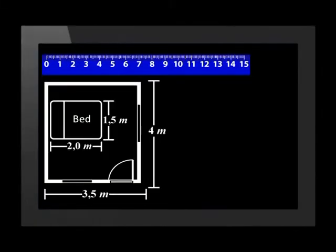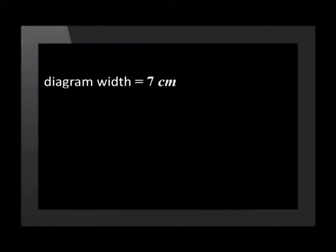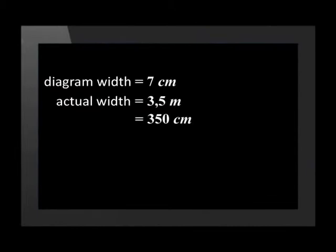Let's check our answer by doing this calculation with another measurement on the diagram. Measuring the width of the room on the drawing, we get a measurement of 7 centimeters. The actual distance is marked as 3.5 meters. Again, we need both the measurements to be in the same unit. This means that the diagram width is 7 centimeters and the actual width is 350 centimeters. We divide the actual width of 350 centimeters by the diagram width of 7 centimeters and get 50.